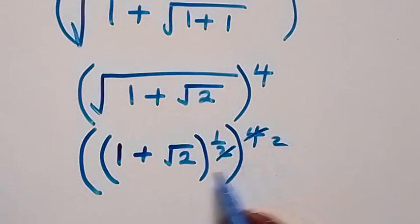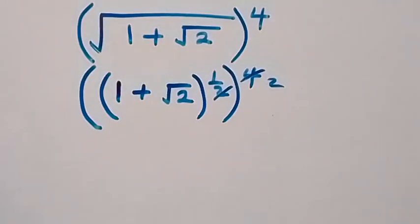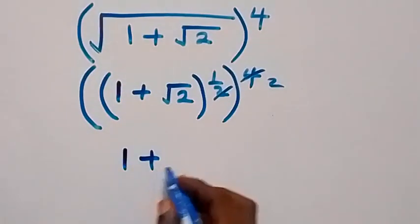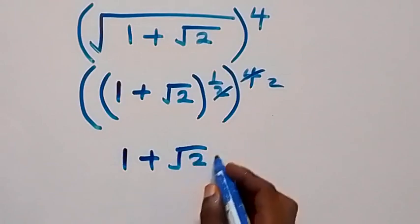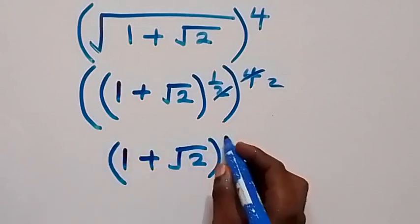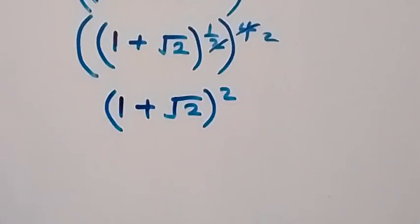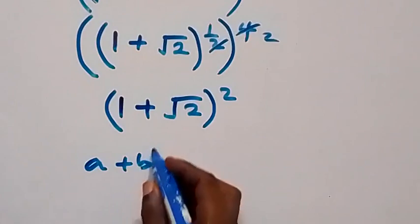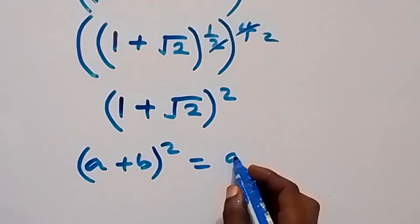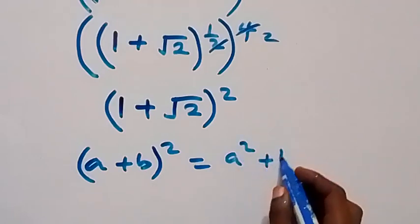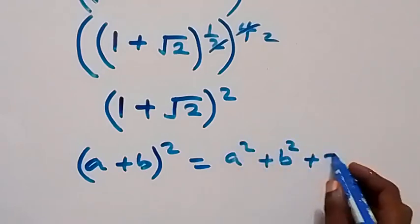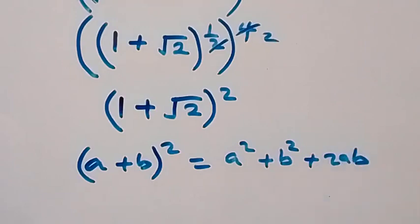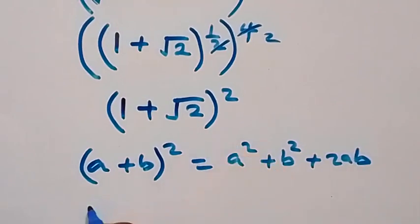When we have a plus b squared, we can write this as a squared plus b squared plus 2ab. That will be 1 squared plus root 2 squared.